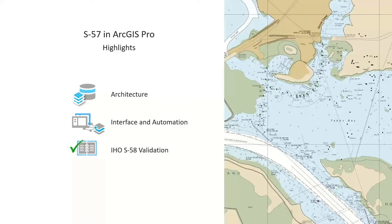A lot of what you can do in the interface can also be automated because we take advantage of geoprocessing tools, which can be scripted or put together in Model Builder and run as a scheduled task or run completely outside of the desktop application. And something new coming in the upcoming release in May is enhanced support for the IHO — International Hydrographic Organization's — S58 validation, including integrated validation that was not even available in ArcMap.